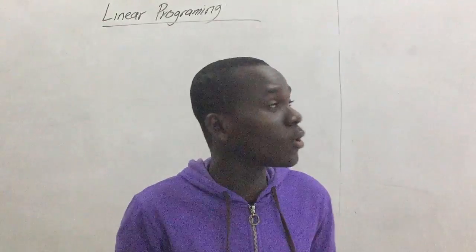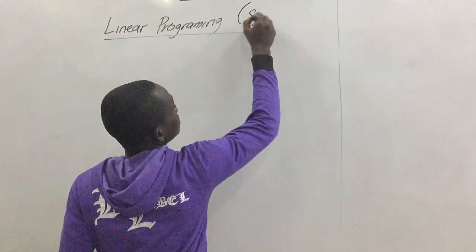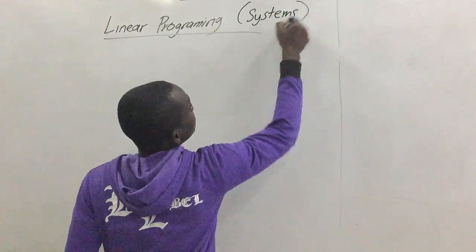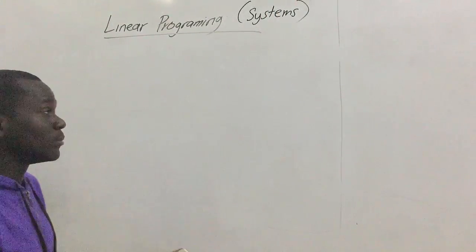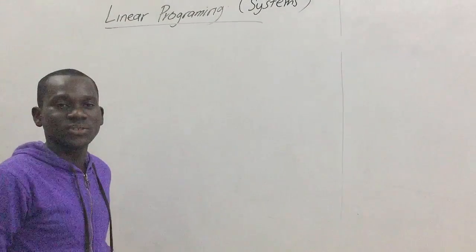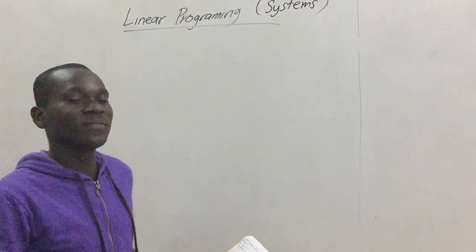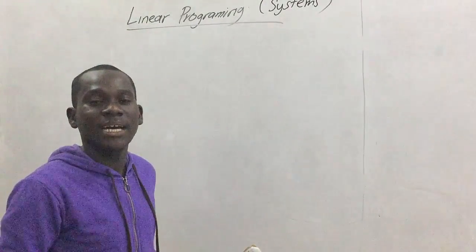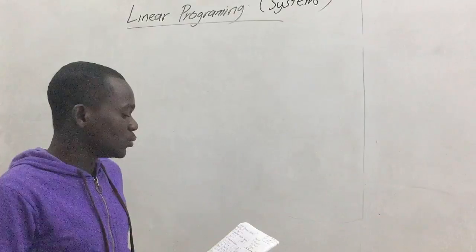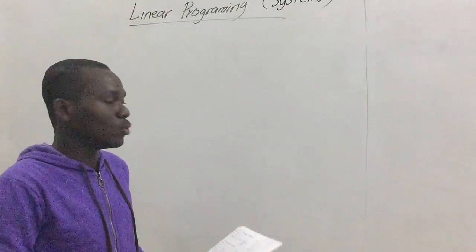But before that, let's talk a little bit about systems and linear programming. We have basically three types of systems, and this comes as a result of the kind of solutions that they give. So the first one we will talk about is what we call the consistent solution.